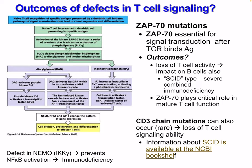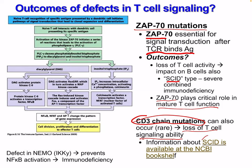Regarding ZAP70 mutations: ZAP70 is essential for signal transduction after T cell receptor binds to antigen. A ZAP70 mutation results in the loss of T cell activity, impacts B cells, and causes SCID — severe combined immunodeficiency disease. ZAP70 plays a critical role in mature T cell function. CD3 chain mutations can also occur but are very rare and result in a loss of T cell signaling ability.